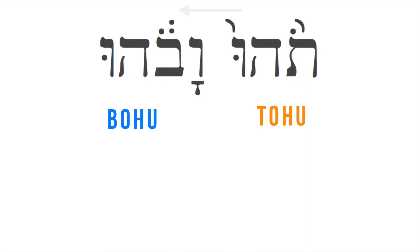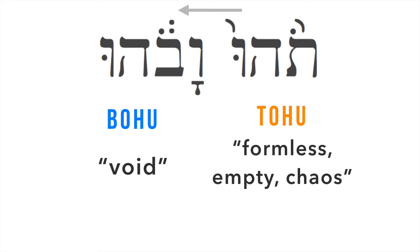The two words in Hebrew are bohu and tohu. In Hebrew we read from right to left. The word tohu means formless, empty, chaos. The word bohu means void. In Hebrew this is read as "tohu vobohu" — without form and void, or formless and void.